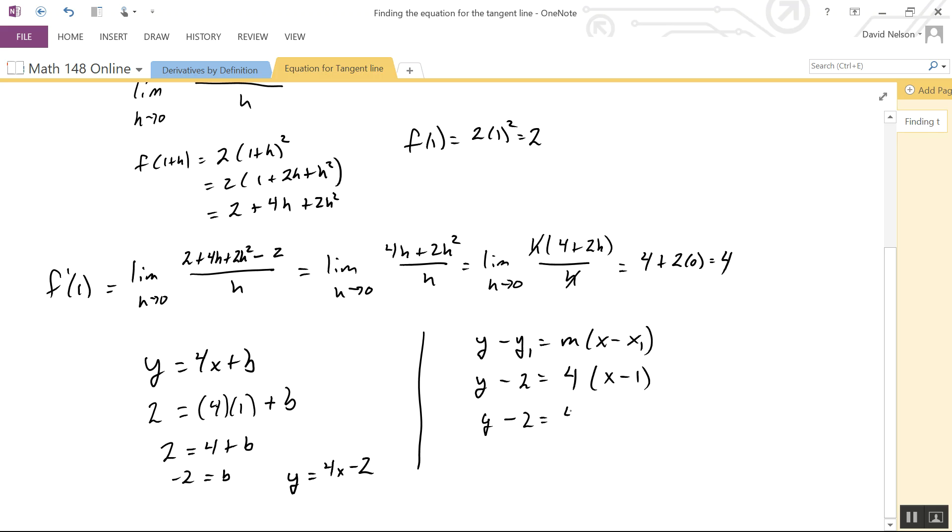So you get y - 2 = 4(x - 1). If we simplify that - distribute the 4 through the parentheses and add 2 to both sides - you get y = 4x - 2.